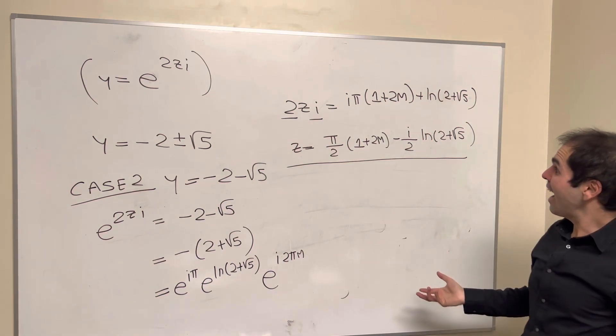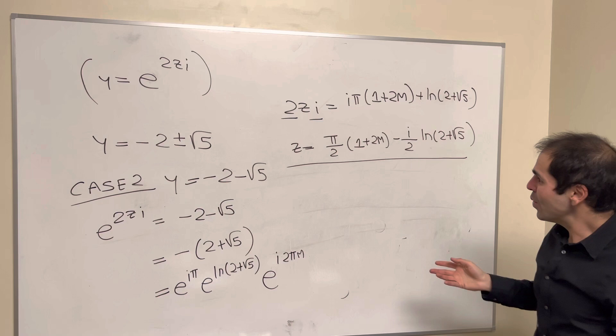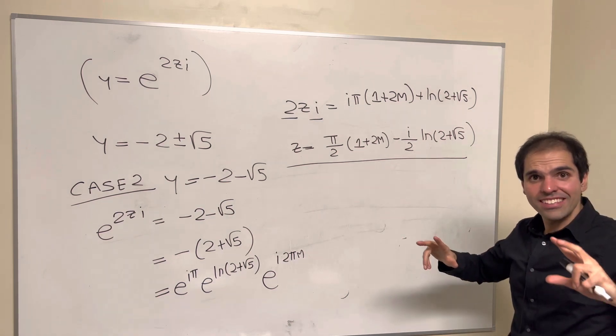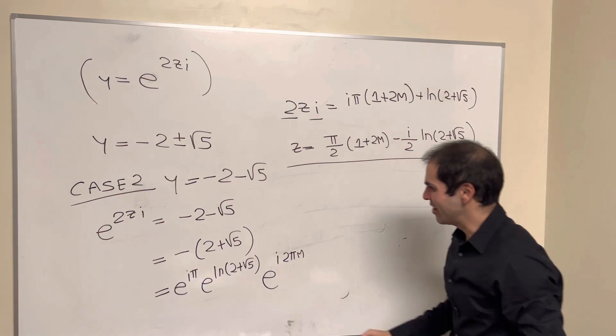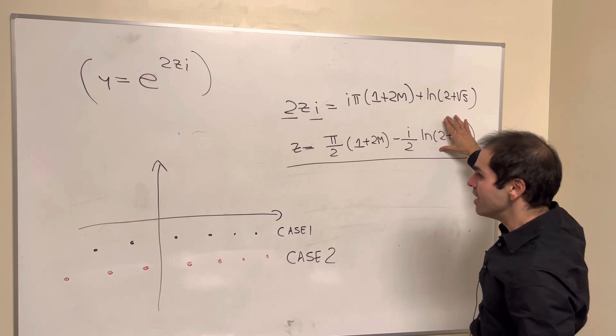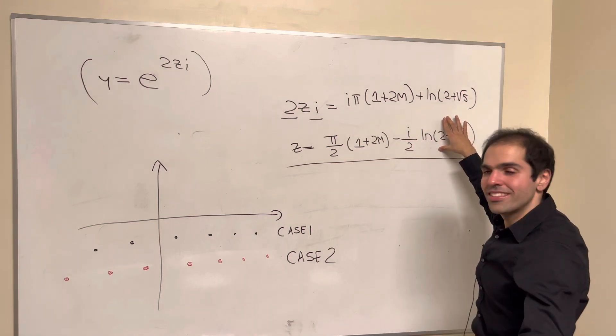So, those are the two kinds of solutions, and the cool thing is, at least if you visualize them geometrically, here's what they look like. Because in both cases, either case 1 or case 2, the imaginary part is constant.